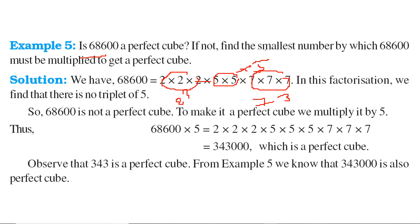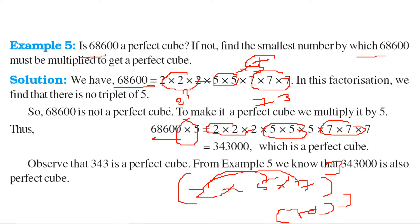So find the smallest number by which this must be multiplied to get a perfect cube. So you need to multiply it by 5. So 68600 multiplied by 5 will give you 5 cubed into 2 cubed into 7 cubed. This is 2 into 5 into 7 whole cubed. 5 into 10 is 50, 50 times 7 is 70. So this is 70 cubed. So you have to multiply it by 5.